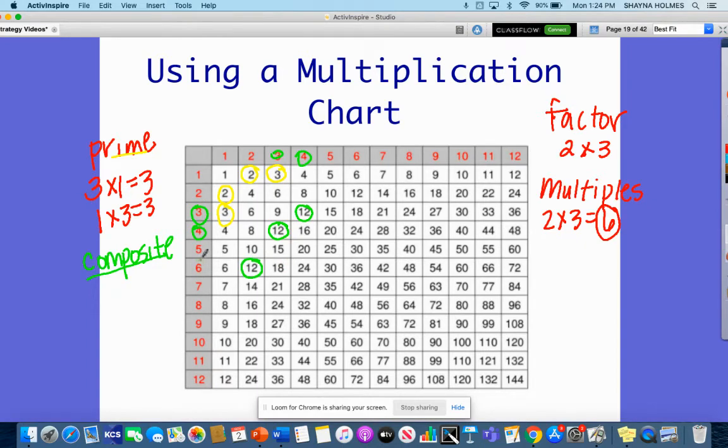I have 12 here, six and two. I have 12 here, six and two again. So 12 is a composite number because I can multiply four times three and get 12.